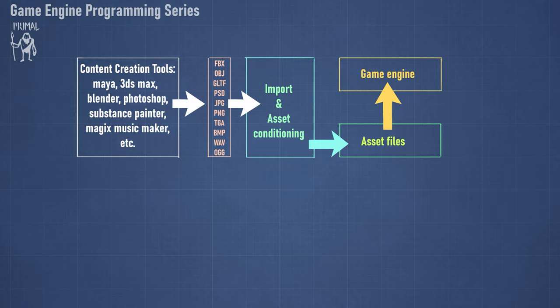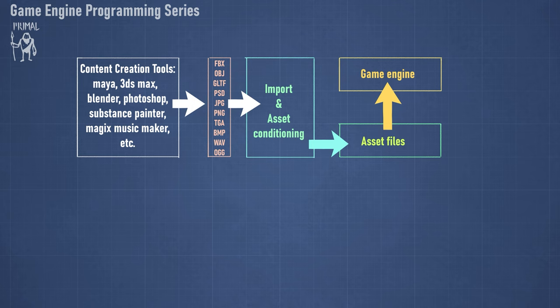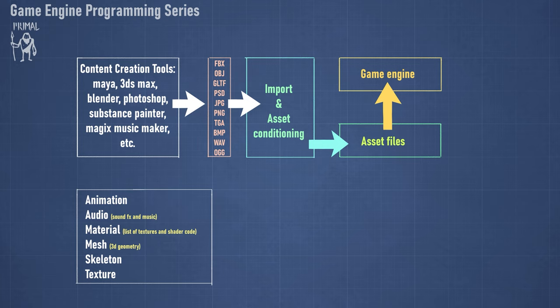Although the files created using these tools can be loaded directly in a game engine, they are generally not in a format best for use in a real-time application — that's where asset import and conditioning come into play. Their sole purpose is to convert content into assets in a format usable by the game engine. In Primal game engine we will have the following asset types: animations, audio (sound effects or music), and materials, which are basically a collection of textures and shader code to run on the GPU.